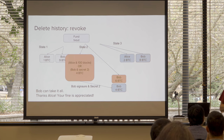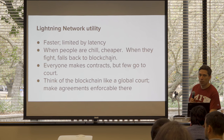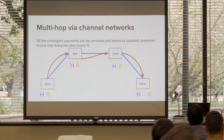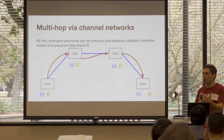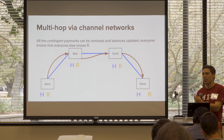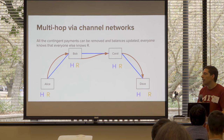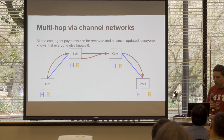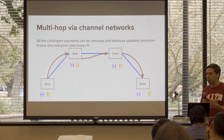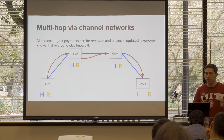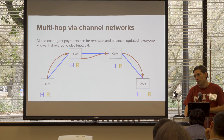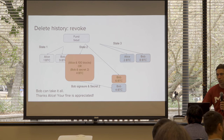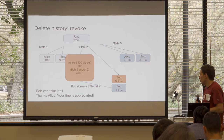In the HTLC output script, you have the data H, then OP_HASH160, OP_EQUAL_VERIFY — the only way to progress through these opcodes is to know R. That value R shows up in the witness script when the transaction is grabbed. These revocation secrets never show up on-chain — they just look like a normal signature, which is kind of cool.